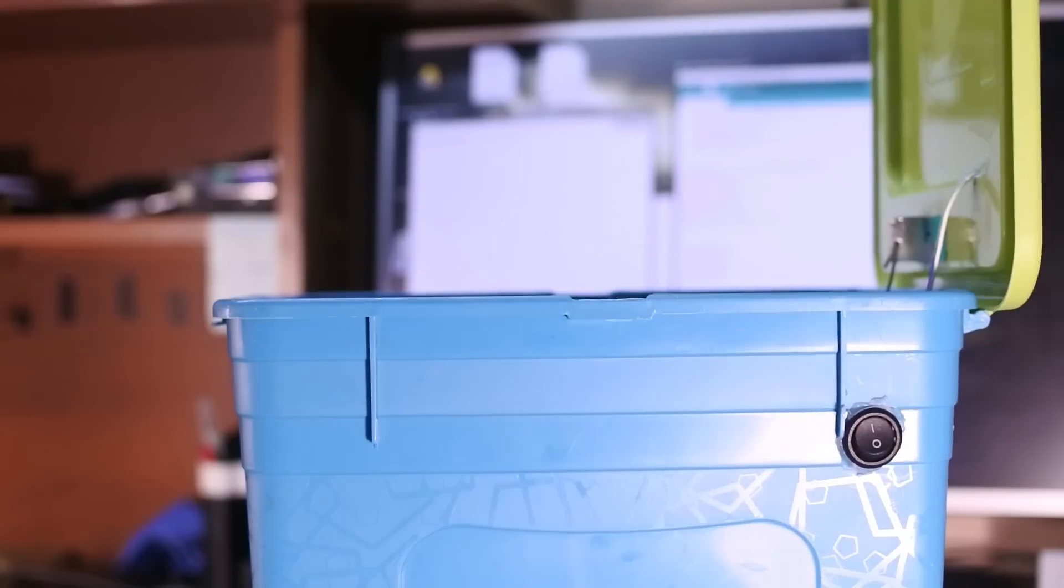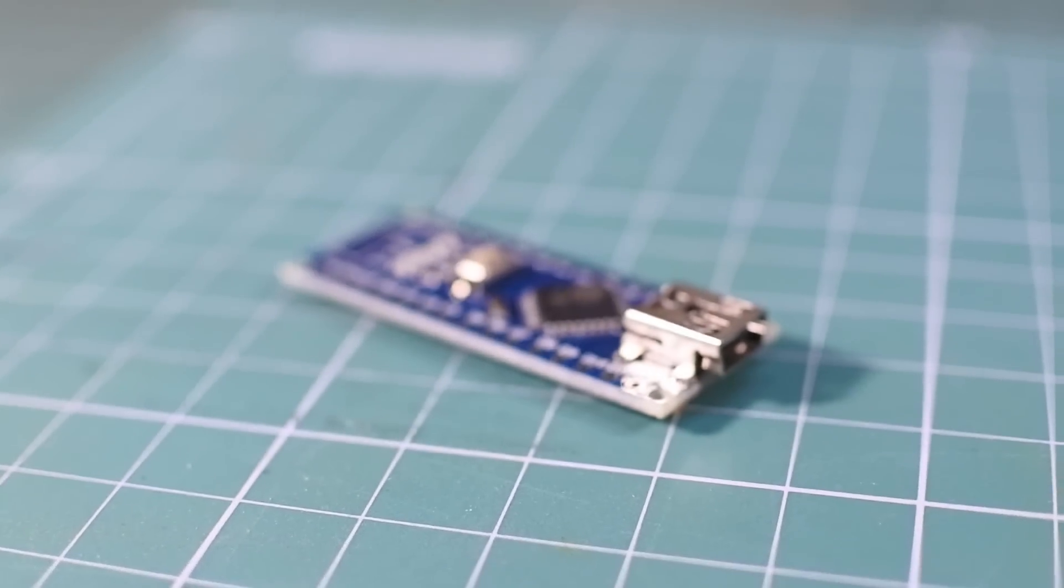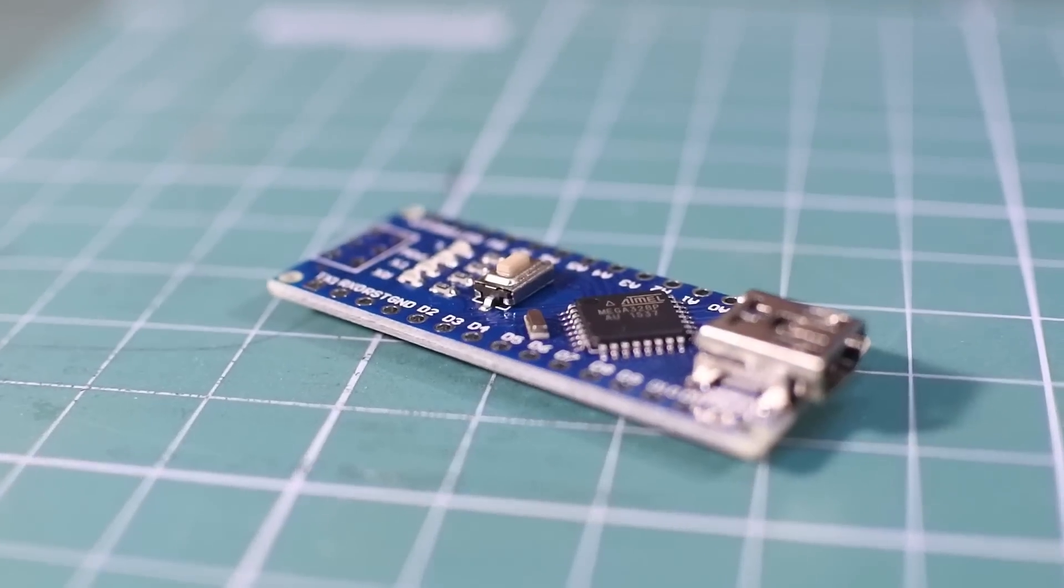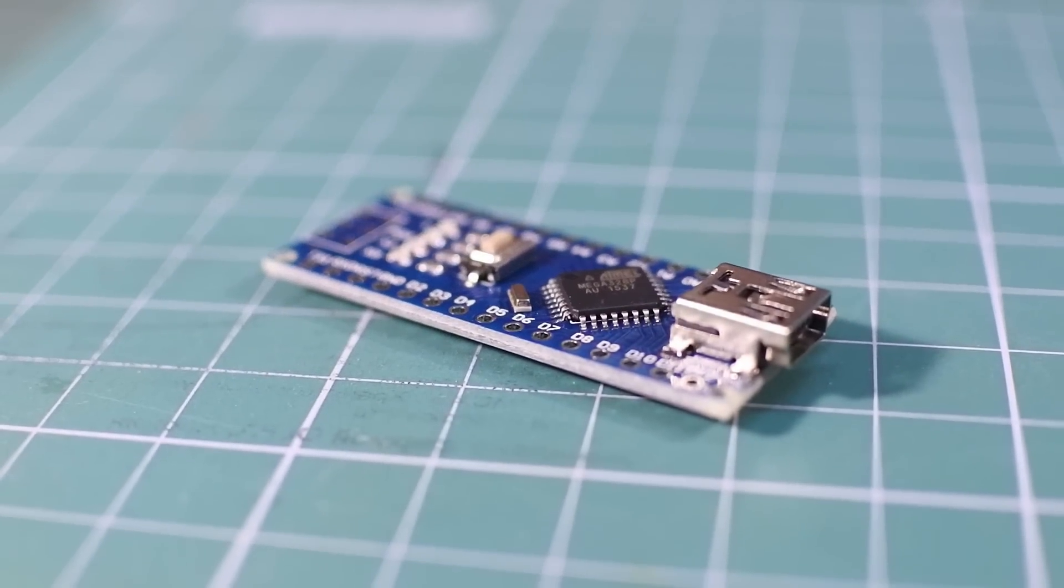Also the trash can has a switch for service, so the cap is open while the switch is pressed. The brain of the system is Arduino, so you can change all distances and times very easily by editing the sketch.